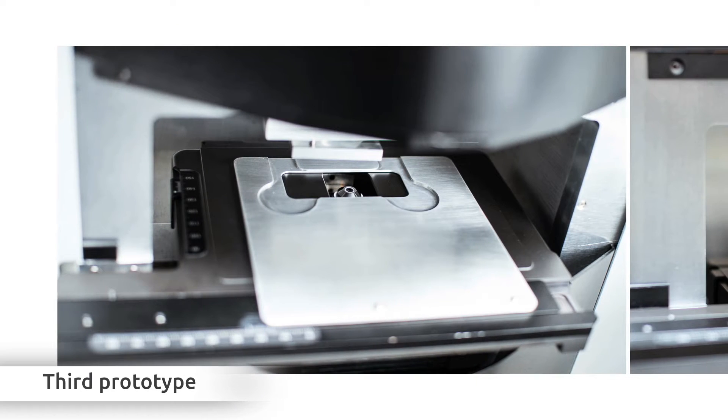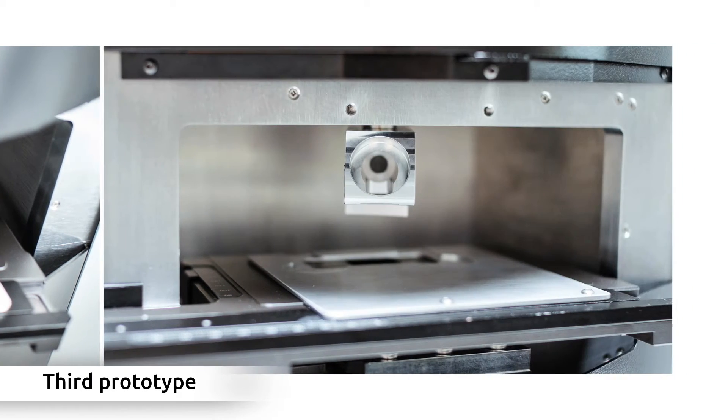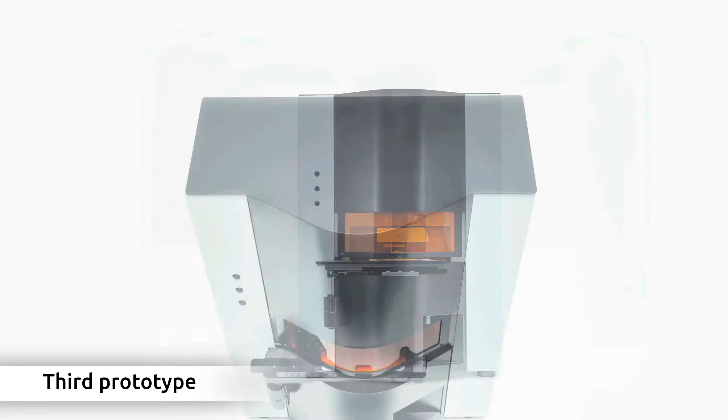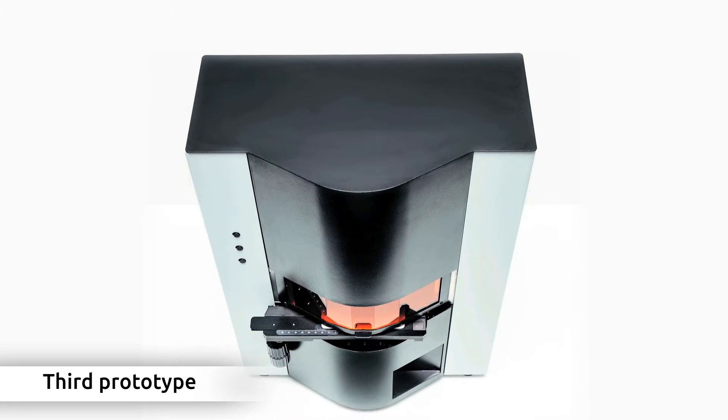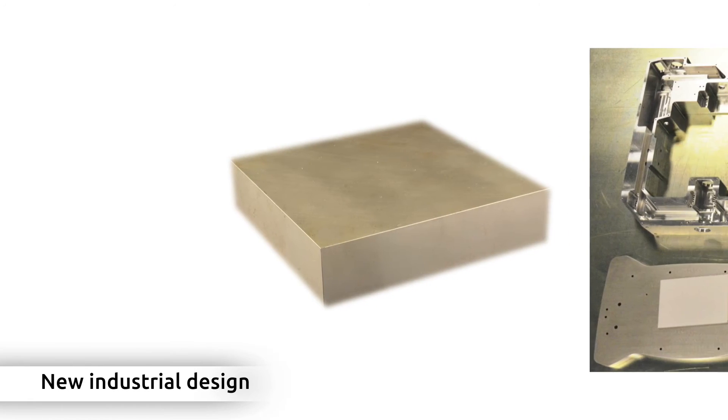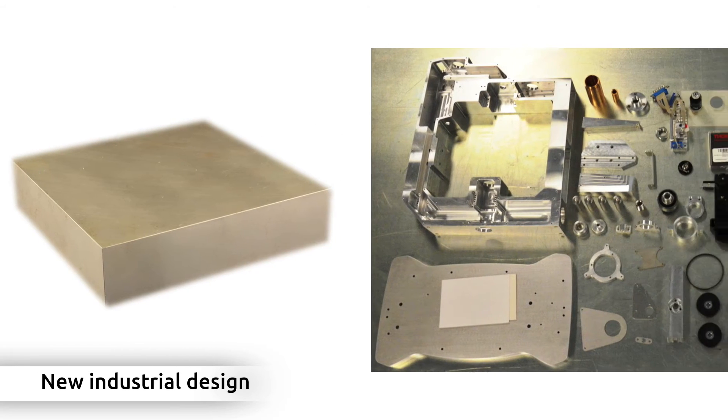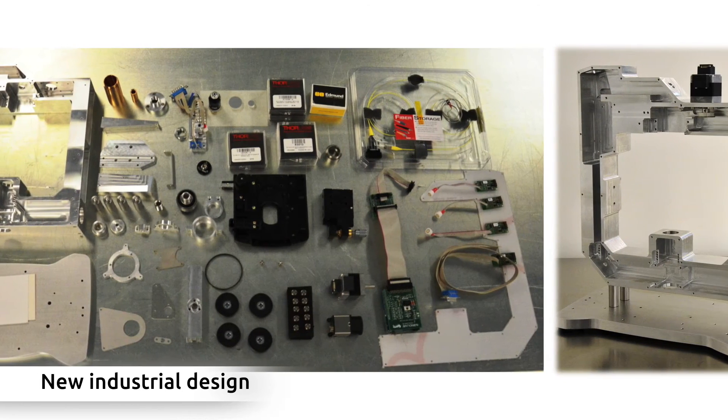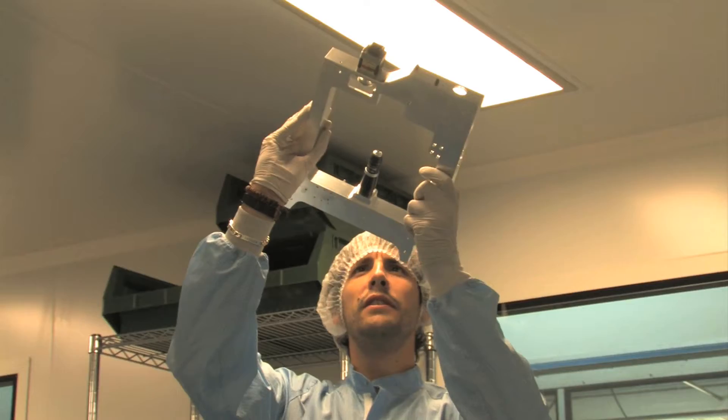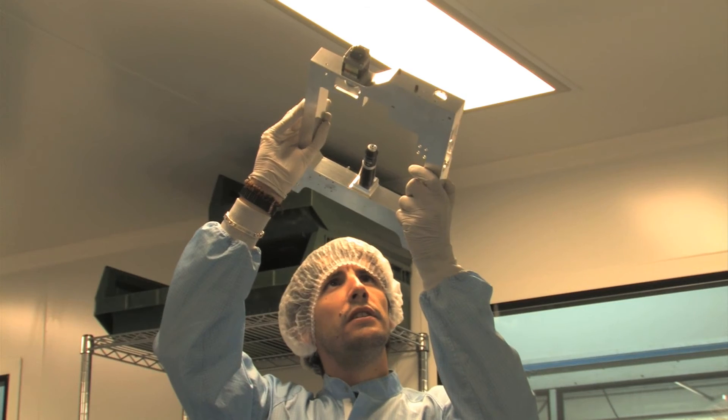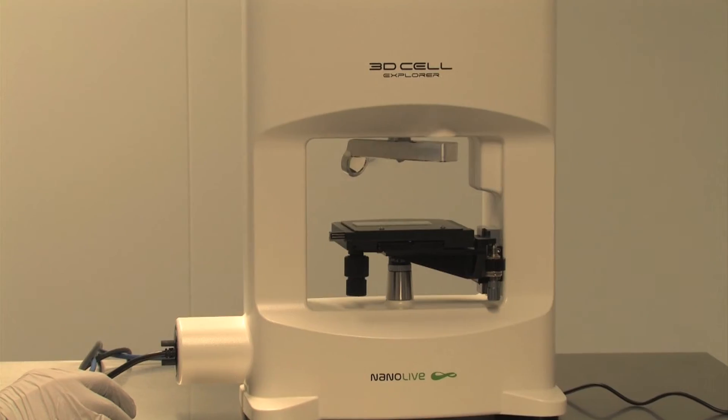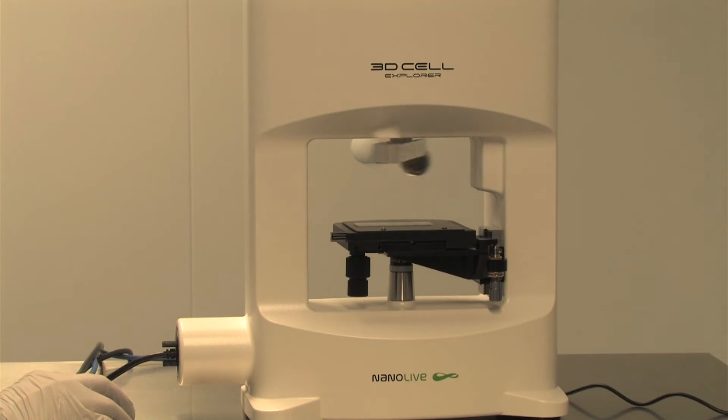Yet we knew that we had to reduce size and complexity to create a microscope unified by one simple concept. We created the first unibody microscope in the world, entirely derived from a single piece of aluminum. With this simple design, the 3D Cell Explorer became thinner, lighter, and more stable. A product characterized by the precision and perfection of details that only industrially crafted machinery can wield.